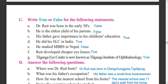B - he was the eldest child of his parents. This is false because his parents had four children and he is the second eldest. C - his father gave importance to his children's education. This is true. D - he did his studies in India, from Darjeeling - true. E - he studied MBBS in Nepal. This is false. F - Dr. Rohit developed cheaper eye lenses - this is true. G - Tillagangha Eye Center is now known as Tillagangha Institute of Ophthalmology - this is also true.